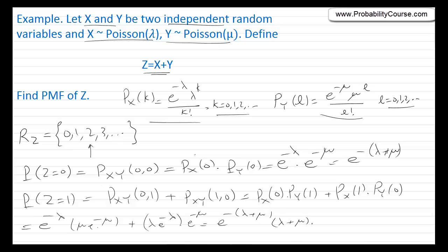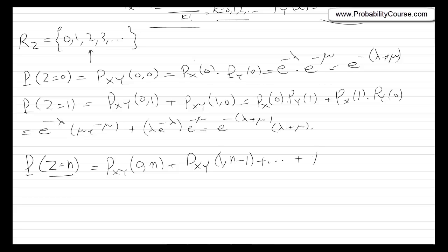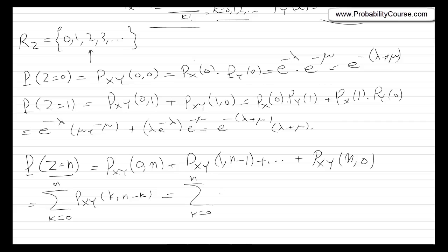Now, in the general case, let's find P_Z(n) for all values. How can Z equal n? Since Z = X + Y, one possibility is X=0, Y=n; another is X=1, Y=n−1; and so on, up to X=n, Y=0. So this is the sum from k=0 to n of P_{XY}(k, n−k), which by independence of X and Y equals the sum from k=0 to n of P_X(k) · P_Y(n−k).